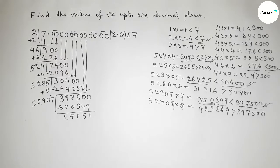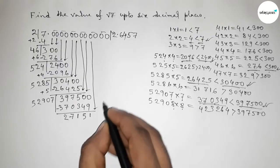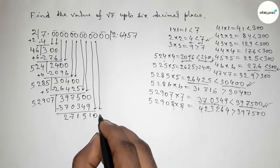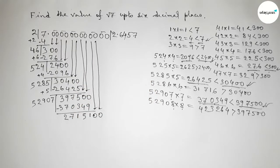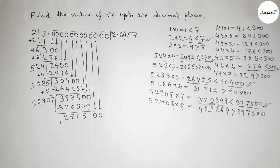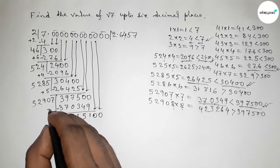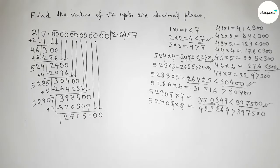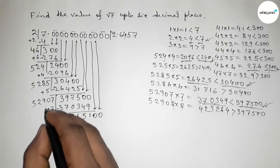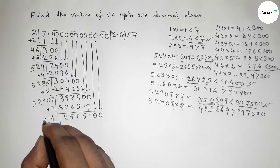Similarly, write the next pair of zeros and draw a division line. The last digit is 7, so 7 plus 7 equals 14 — carry 1, giving 5291 and then 2.